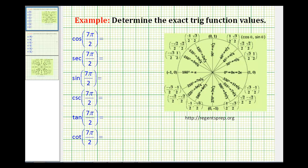Welcome to examples of determining exact trig function values when the angle is given in radians using the unit circle. If the angle is sketched in standard position, the point where the terminal side intersects the unit circle gives us cosine theta and sine theta, where the x-coordinate is cosine theta and the y-coordinate is sine theta.